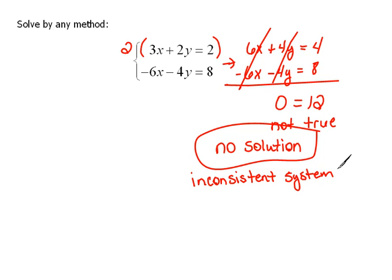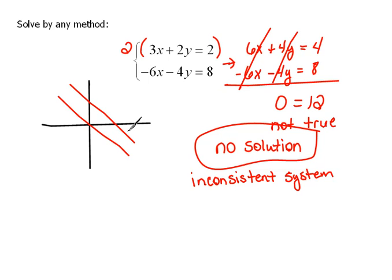Let's think about this for a second. If these are two lines and we were to graph them, what kind of lines will never intersect, never have a point in common? They would be lines running side by side, never crossing, never touching — those are parallel lines. Parallel lines are called an inconsistent system because they do not have a solution; there's no way they're ever going to touch or cross, so they'll never have a point in common.